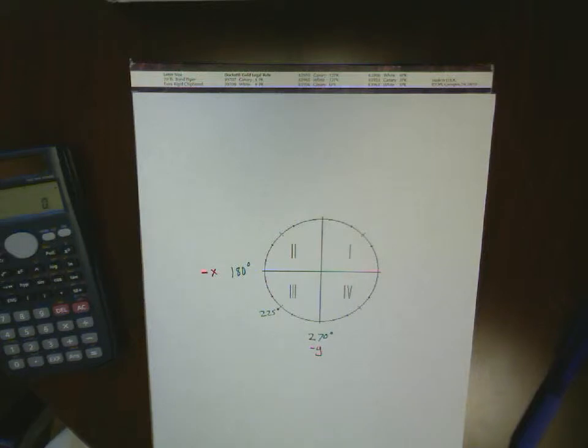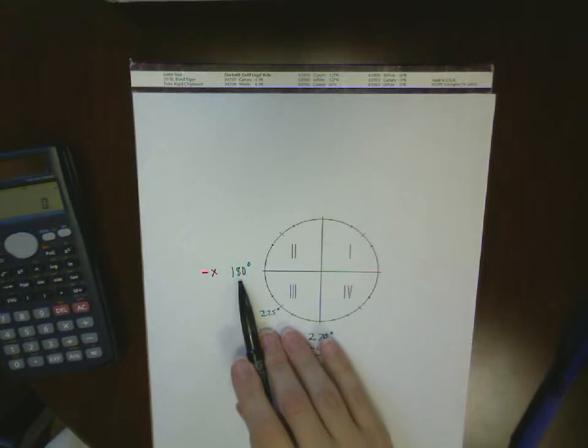Now let's talk about vectors which are over here in the third quadrant, meaning they have negative x values and negative y values. And that corresponds to angles between 180 degrees and 270 degrees.